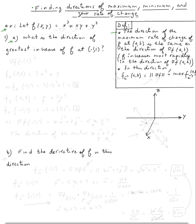Let's read the theorem. The direction of maximum rate of change of f at a point (a, b) is the same as the direction of the gradient at that point. In other words, f increases most rapidly in the direction of the gradient of f at the point (a, b).